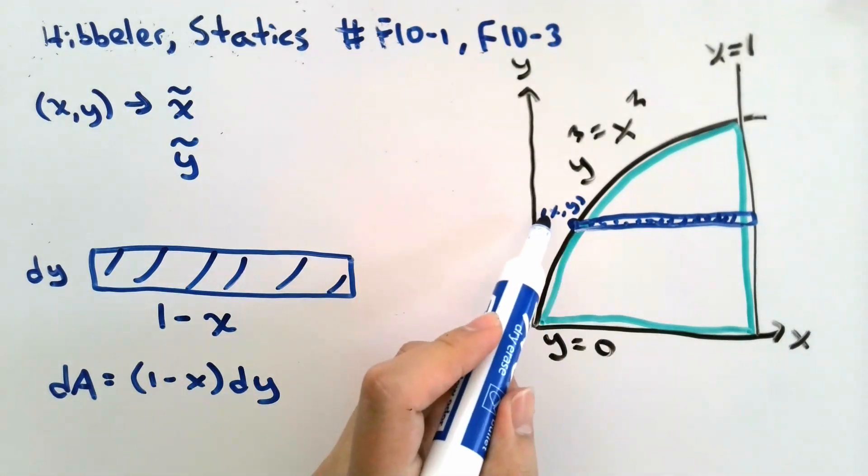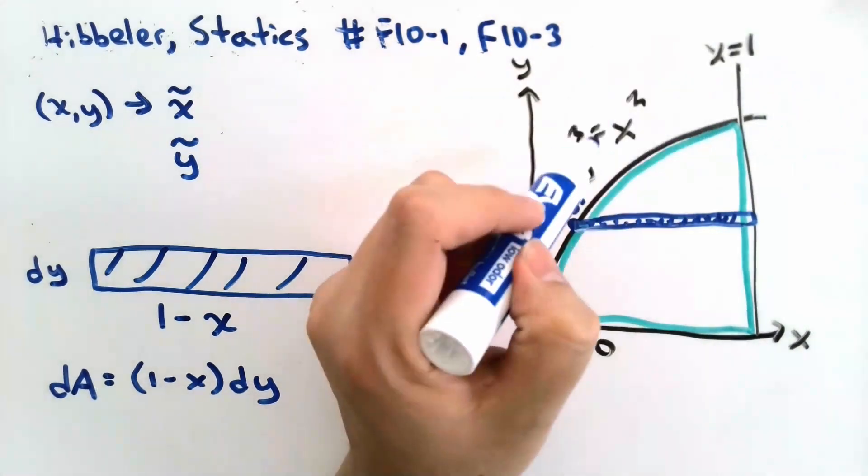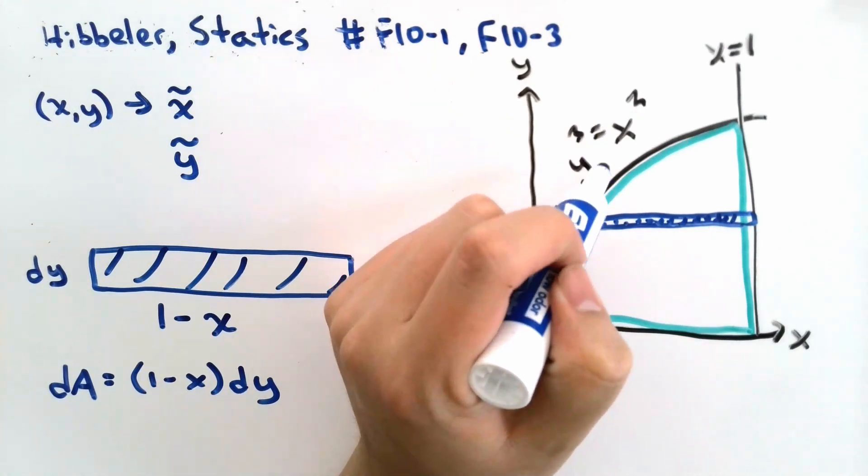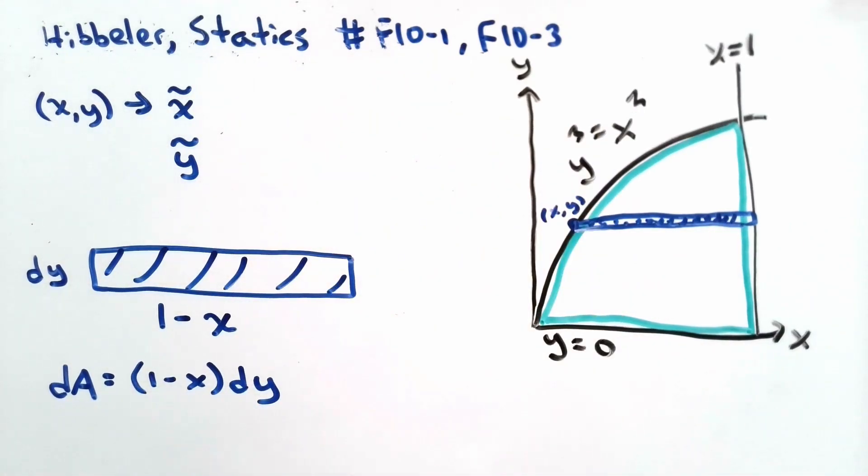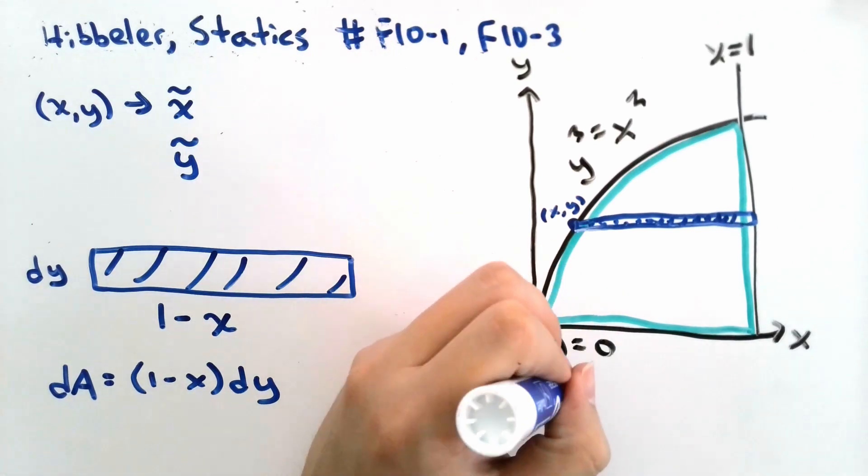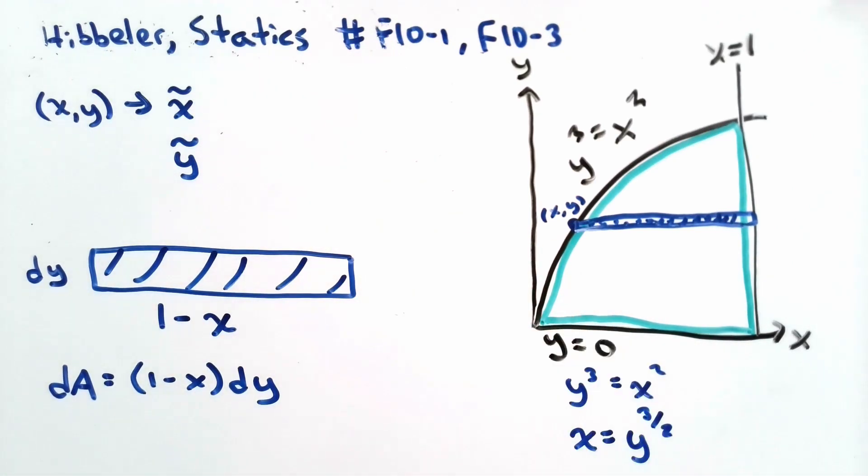We know that for our point x, y, the following relationship will be held: y cubed equals x squared. So we can express x as a function of y as follows: x is equal to y to the power of 3 over 2. We can write this down in our area equation.